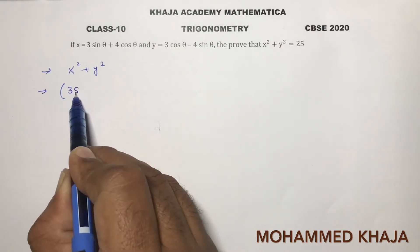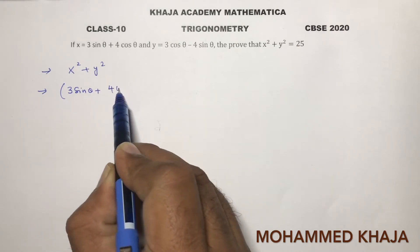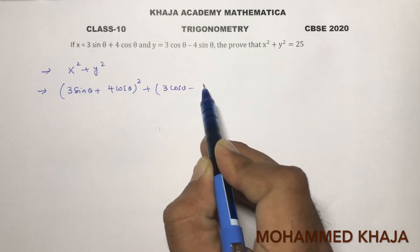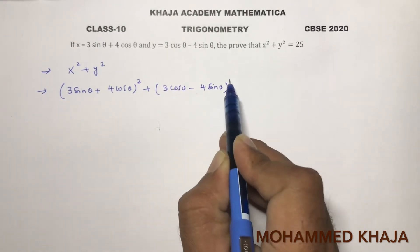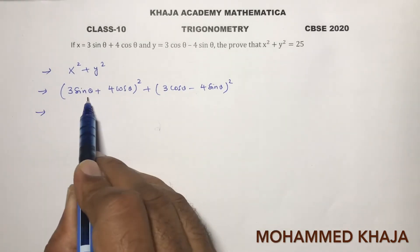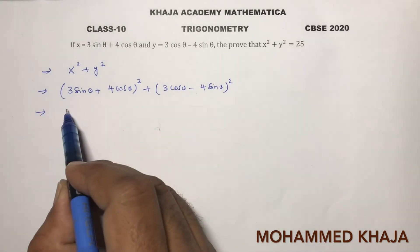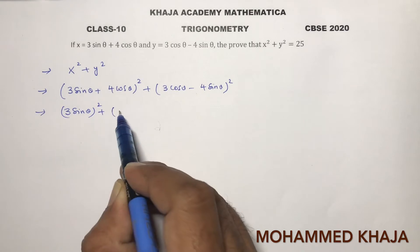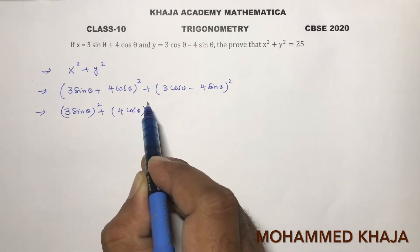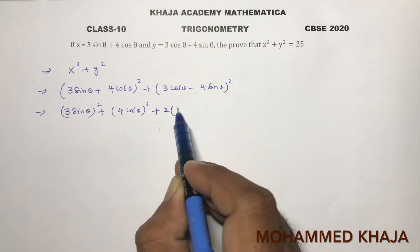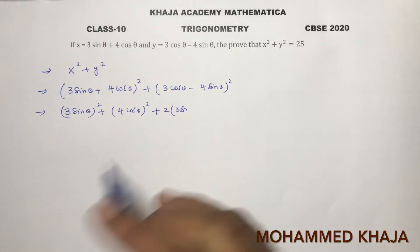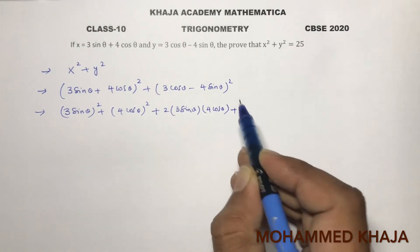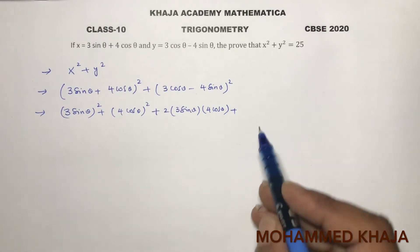x is 3 sin theta plus 4 cos theta, whole square, plus y value is 3 cos theta minus 4 sin theta, whole square. So x squared is in the form of (a + b) whole square: a squared, which is (3 sin theta) squared, plus b squared, which is (4 cos theta) squared, plus 2ab, which is 2 into 3 sin theta into 4 cos theta.